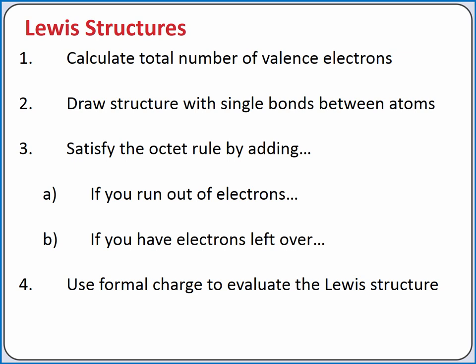Third, we'll satisfy the octet rule by adding lone pairs of electrons, starting with peripheral atoms. Peripheral atoms are only bonded to one other atom, whereas central atoms are bonded to two or more other atoms. If we run out of lone pairs and not all of our atoms are satisfied, we'll create double or triple bonds using the lone pairs we've already distributed until all of our atoms are satisfied.